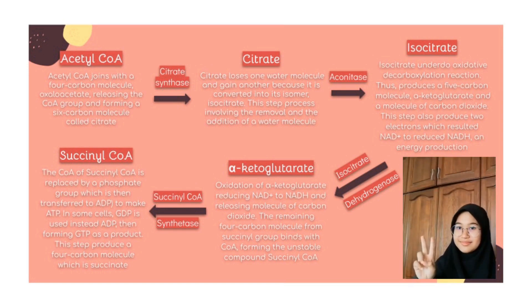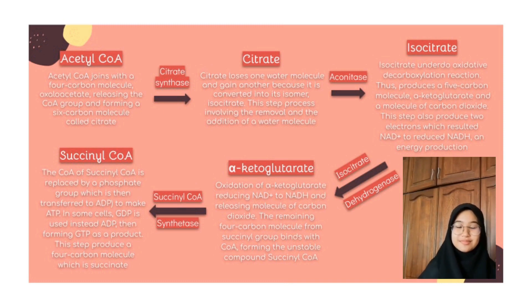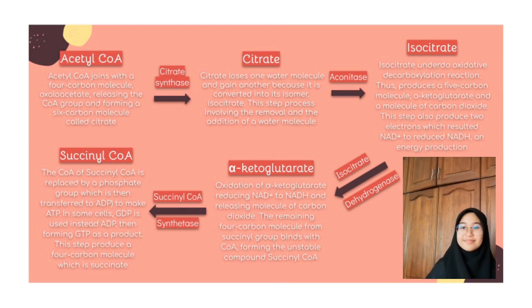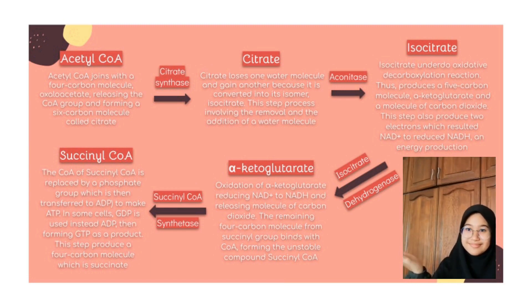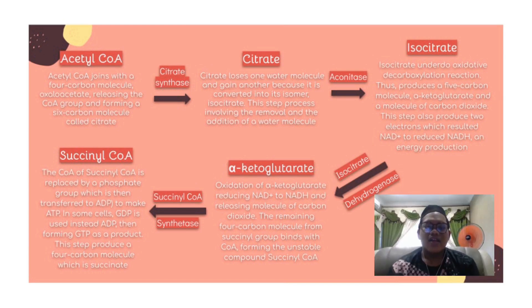In the second step, citrate loses one water molecule and gains another as it is converted into its isomer, isocitrate, with the help of the enzyme aconitase. This is actually a two-step process involving first the removal and then the addition of a water molecule.